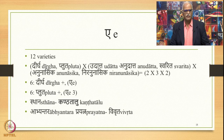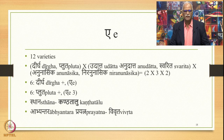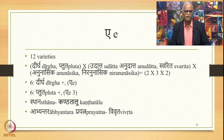Then we go to vowel Ā. This also has 12 varieties, not 18. In this case the raswa variety is absent — there are only dirgha and pluta varieties as far as length is concerned, multiplied by 3 accent varieties, multiplied by nasalized varieties. So 2 multiplied by 3 multiplied by 2 gives 12 varieties — 6 dirgha Ā and 6 pluta Ā. The place of articulation is twofold: kantha-talu (velum as well as palate). The abhyantara prayatna is vivruta.